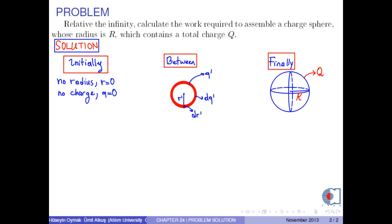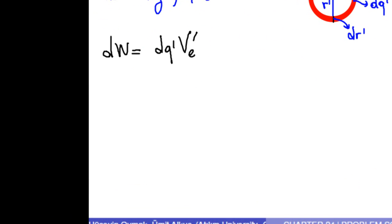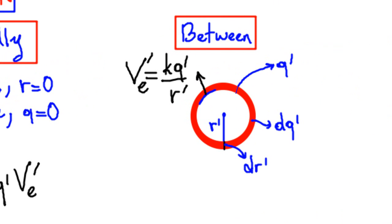We must do the infinitesimal work dW equals dq' times V_e', where V_e', which is calculated as k times q' over r', is the electric potential on the surface of the charge sphere of radius r'.